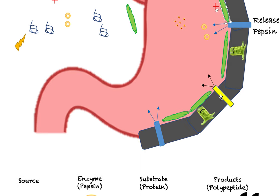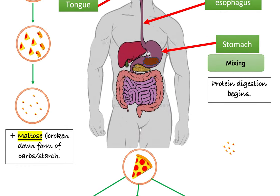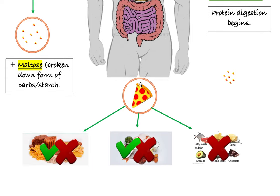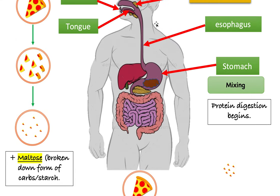That's it for what happens in the stomach. Next time, we're going to move on from the stomach and see what happens to what we have now: maltose, polypeptides, and chyme — these will move down to the small intestine where we need to finish the process. We need to finish carbohydrate digestion, finish protein digestion, and start and finish fats. The stomach does protein digestion. I hope this helped.